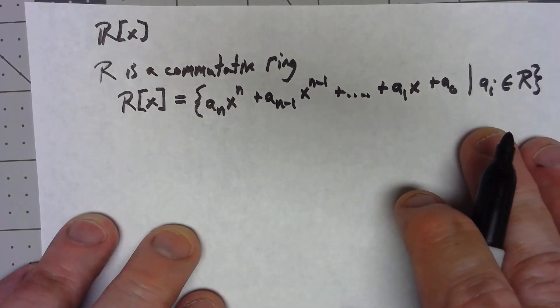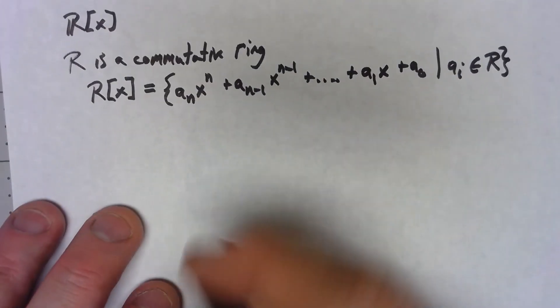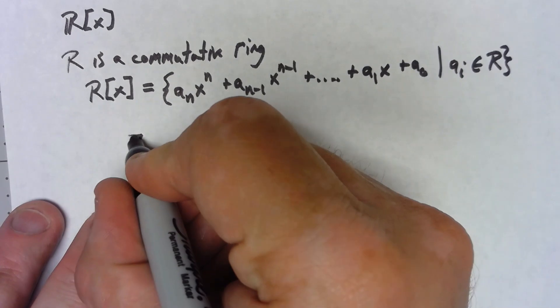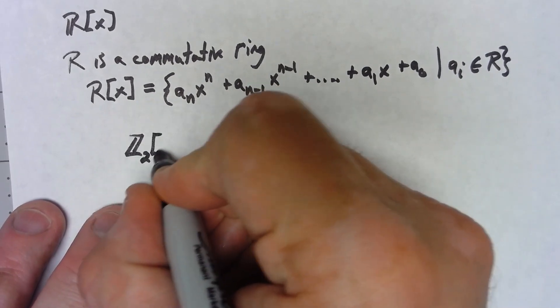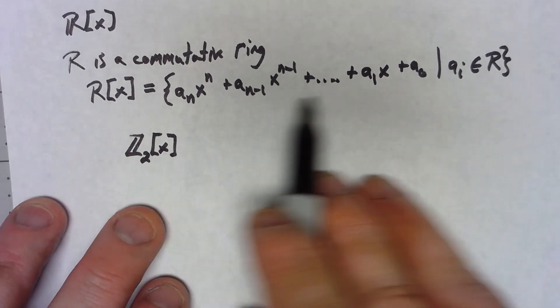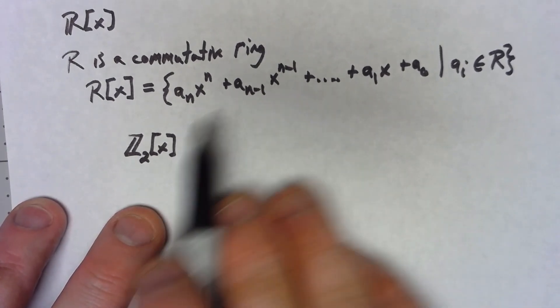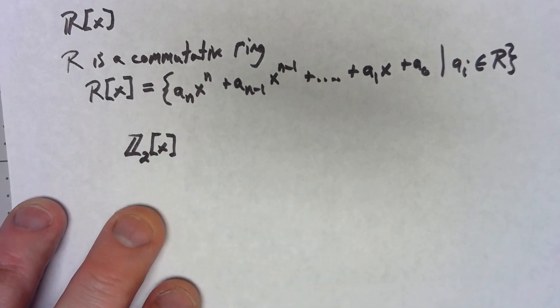Rather than trying to do it in general, let's take a look at a specific kind of thing. So if I have Z2x, that's going to be the set of all polynomials like this where our coefficients are either 0 or 1 because they have to come from Z2.